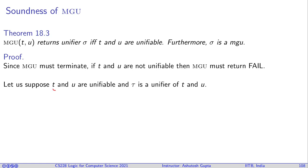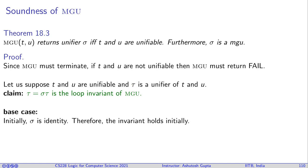Let us suppose t and u are unifiable and tau is a unifier of t and u. Now our claim is that the following equation is a loop invariant of the MGU: that whatever unifier we learn sigma, if you apply with this tau some unifier between t and u, then it will return tau back. Initially sigma is identity, therefore the invariant holds initially.